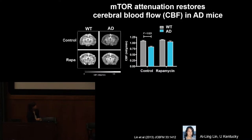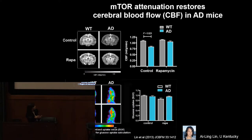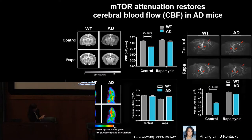So we decided to look at vascular function. Ling performed studies of cerebral blood flow in animals with a model of Alzheimer's disease, with or without rapamycin treatment. Profound differences in cerebral blood flow were completely restored to wild-type levels by chronic rapamycin treatment. Ling determined this was not related to changes in metabolism, but rather to a loss and restoration of vascular density, meaning the mechanistic explanation is the preservation of capillary networks and vascular integrity.